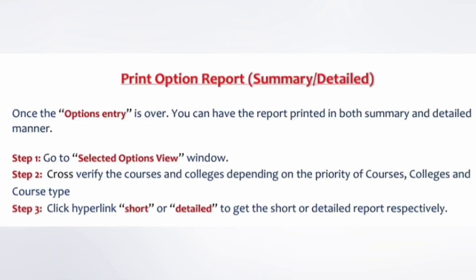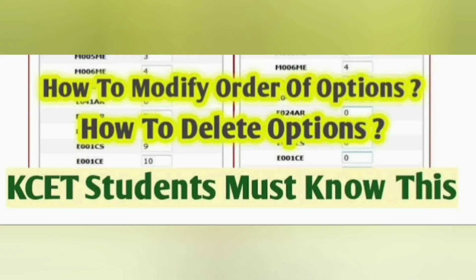The last step is that you can print the option report. Whatever you have modified, added, or deleted in the mock round — after the mock round result — will be available for the first round option entry. You can take a printout of your option report. For example, from 8 options in the mock round entry, you may now have 12 — you continued with reordering but added 4 new ones.